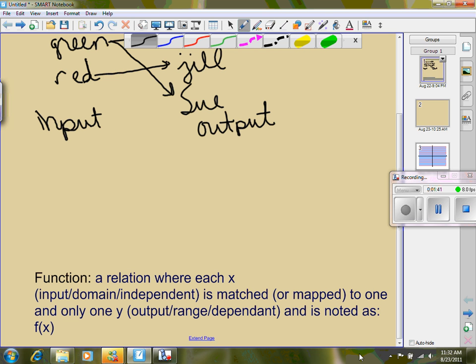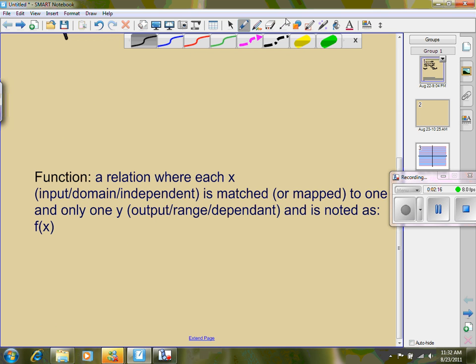Now, what a function is, a function is a special relation. It's where each x, which we also call the input, the domain, or the independent variable, is matched up to, or we call it mapped, to one and only one y. That's really important. It can only go to one and only one y. We also call the y the output, the range, or the dependent variable. And once we know it's a function, we note it as f(x). When we see that notation, we know it's a function, which means we know it's a relation, and for every x there's only one y matched to it.